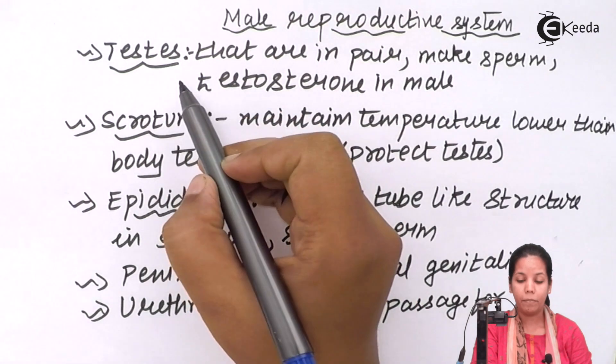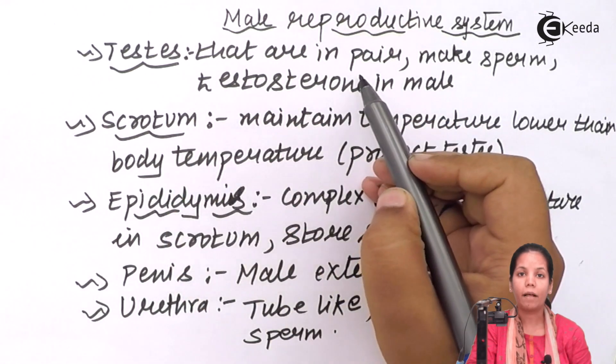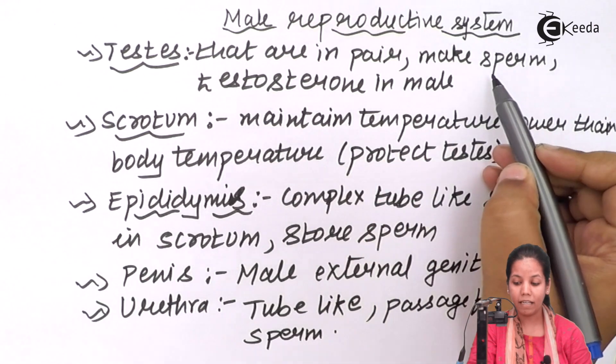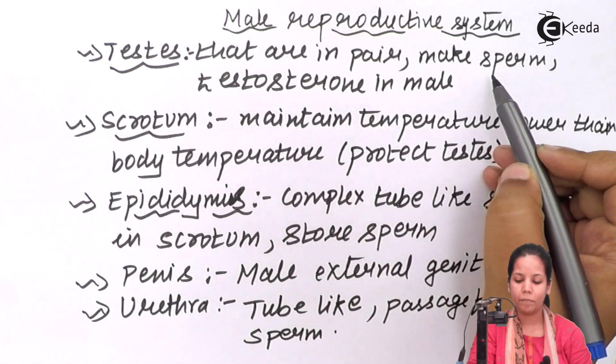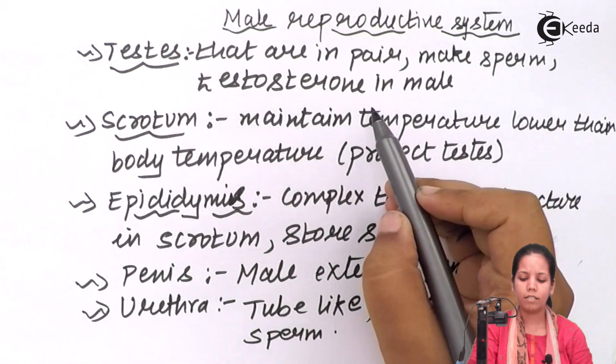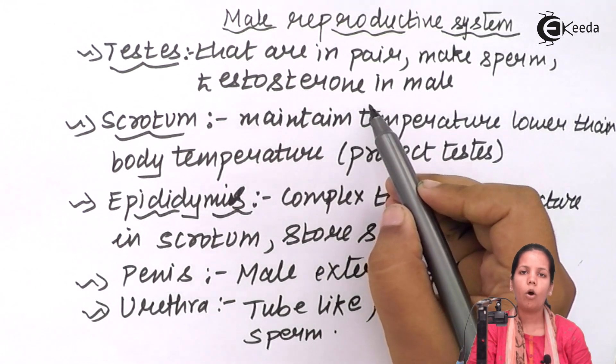For example, the testes are present in pairs and they make sperm, which is the male gamete. They also make a hormone called testosterone in the male.